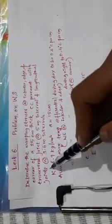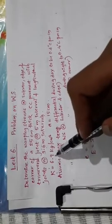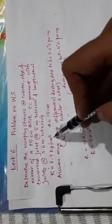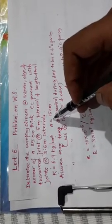Transverse joint at 5 meter interval and longitudinal joint at 3.6 meter intervals. Given: modulus of subgrade reaction as 6.9 kg per centimeter cube and radius of loaded area as 15 centimeter.